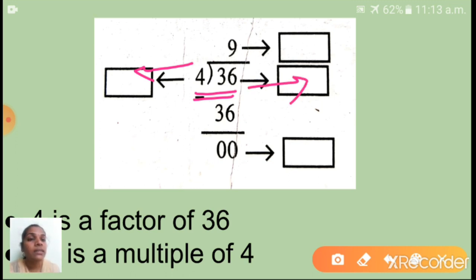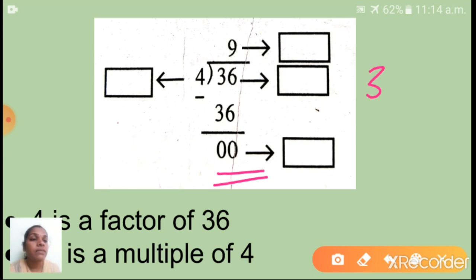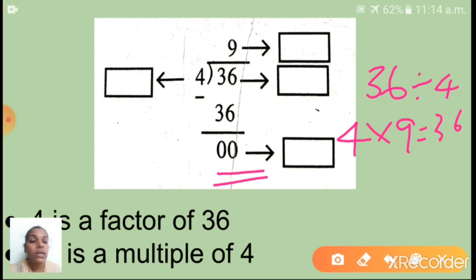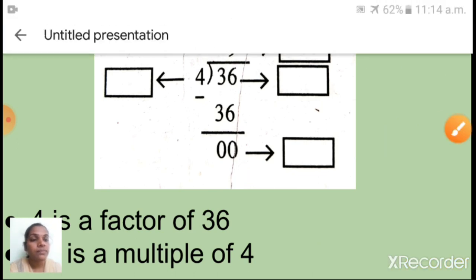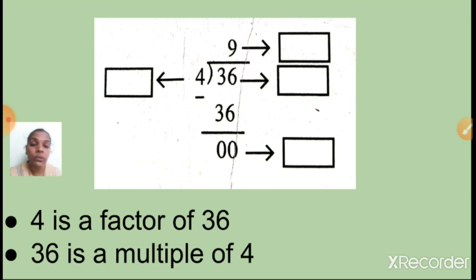We can completely divide 36 by 4, and we can write 4 into 9 equals 36. So 4 is a factor of 36, and 4 and 9 are the factors of 36. From this we can also say: 36 is a multiple of 4. Don't get confused — four is the factor of 36, and 36 is a multiple of 4.